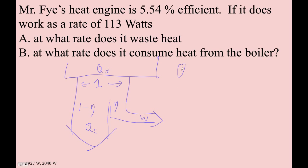So you can just set up a proportion, QH over 1. That's all of it. Is work divided by efficiency is QC over 1 minus, like that. This is very powerful.